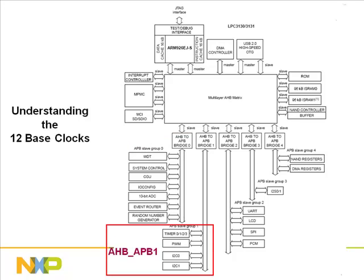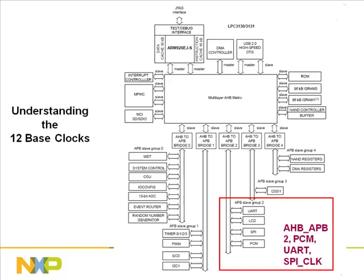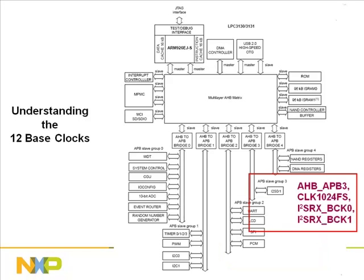The APB2 base clock provides APB clock to PCM, UART, LCD, and SPI interfaces. In addition, PCM and UART interfaces need additional base clocks for timing and baud rate generation respectively. SPI needs an additional clock for its main module clock. Slave group 3 uses the remaining four base clocks, most of which are used in audio-intensive applications.